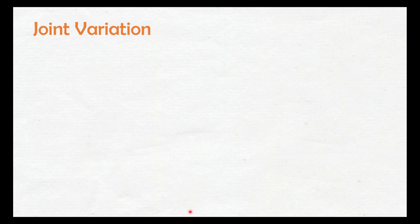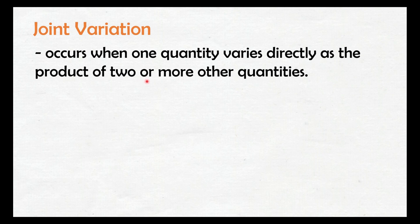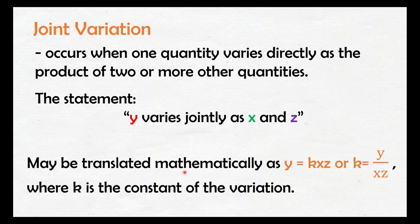Define muna natin kung ano ba yung joint variation. Joint variation occurs when one quantity varies directly as the product of two or more other quantities. Kagaya din lang ito nung direct variation, ang kaso, yung isang quantity mag-vary siya directly sa two or more quantities — hindi isang quantity lang. The statement 'y varies jointly as x and z' may be translated mathematically as y equals kxz, or k equals y over xz.